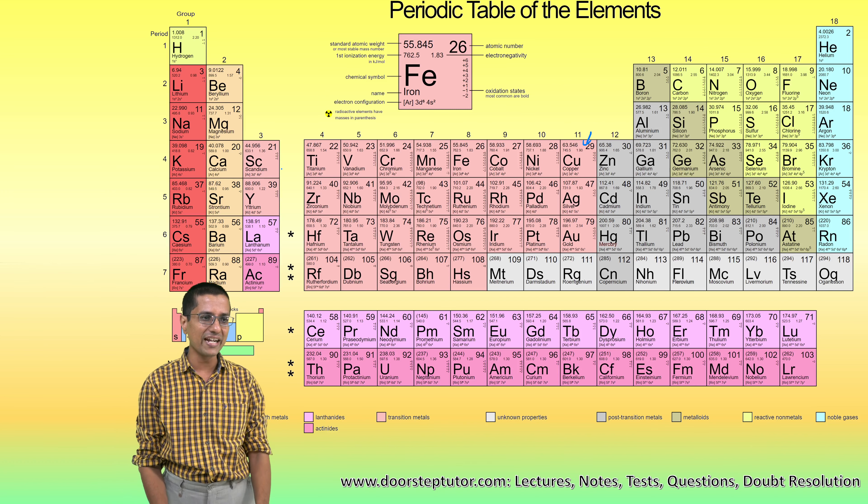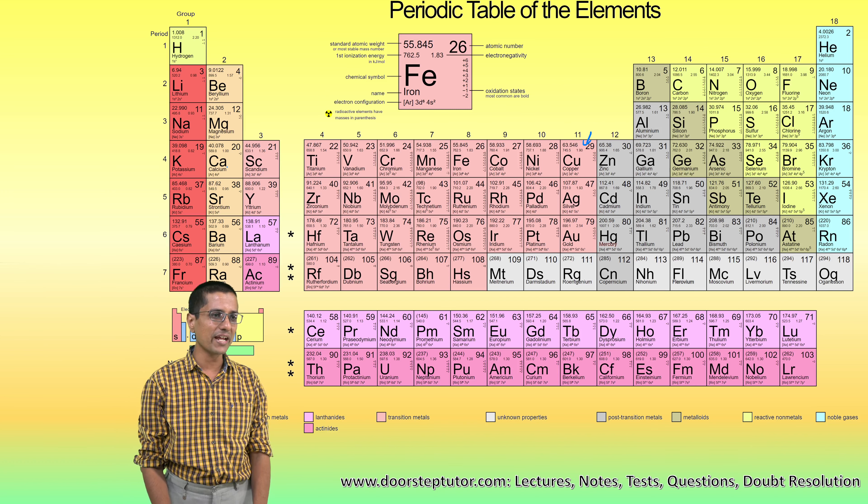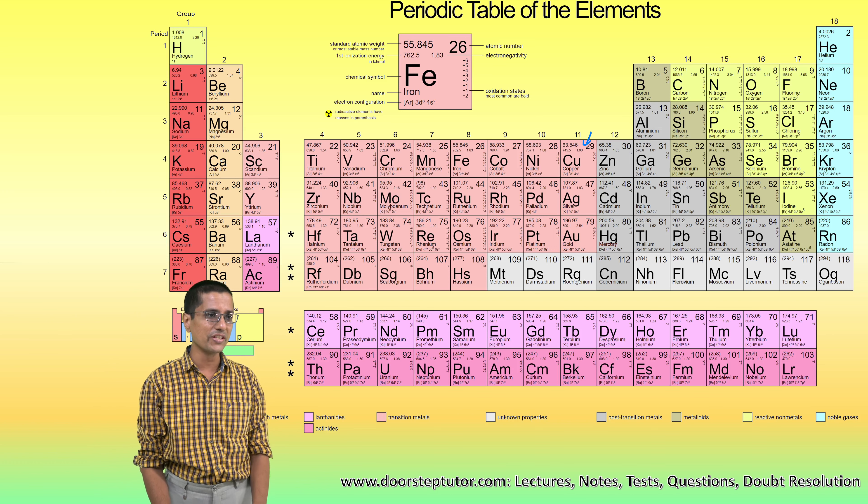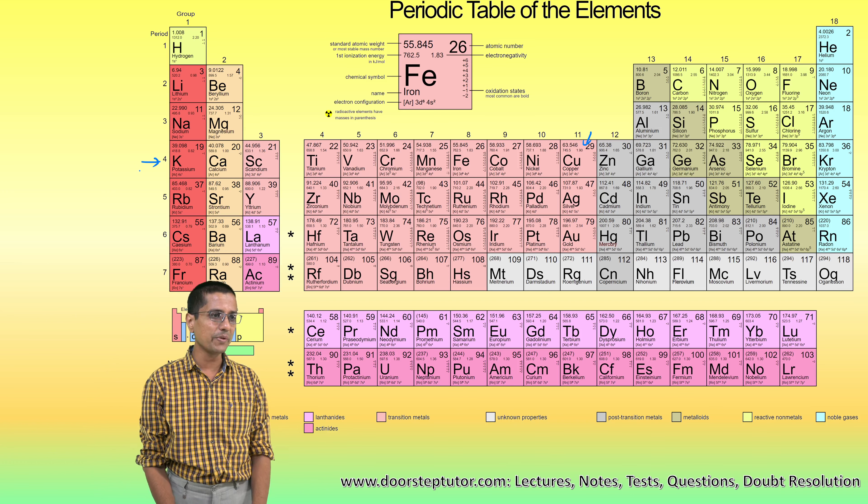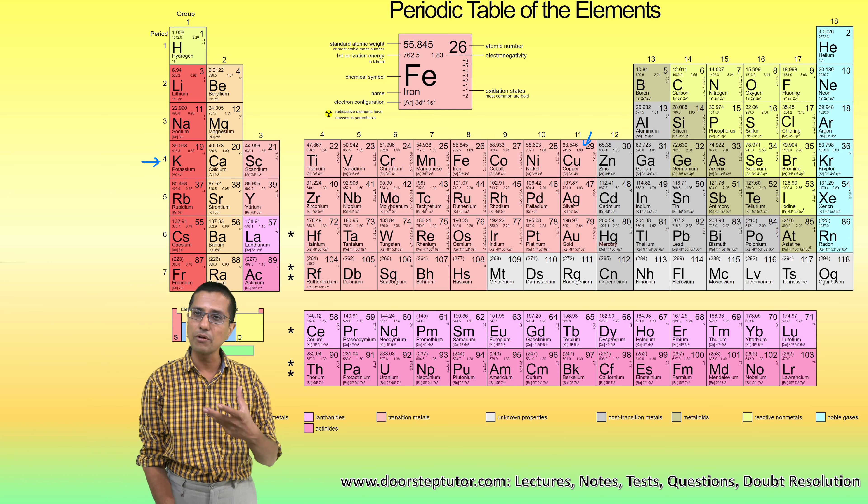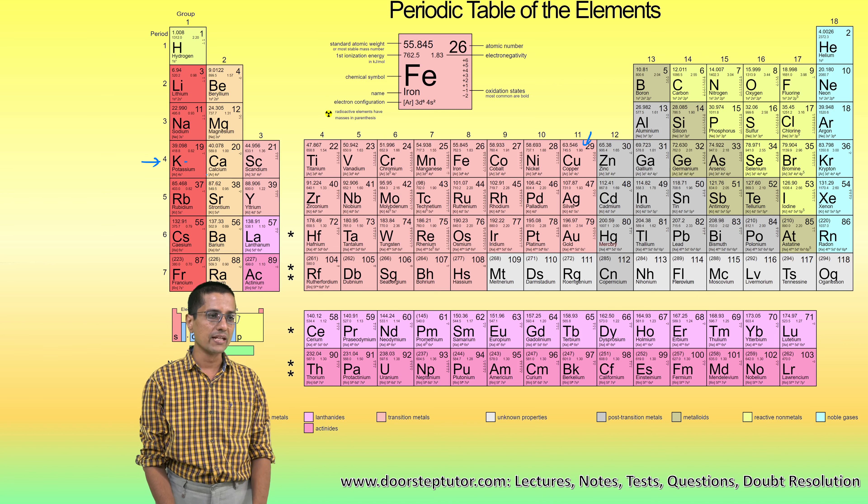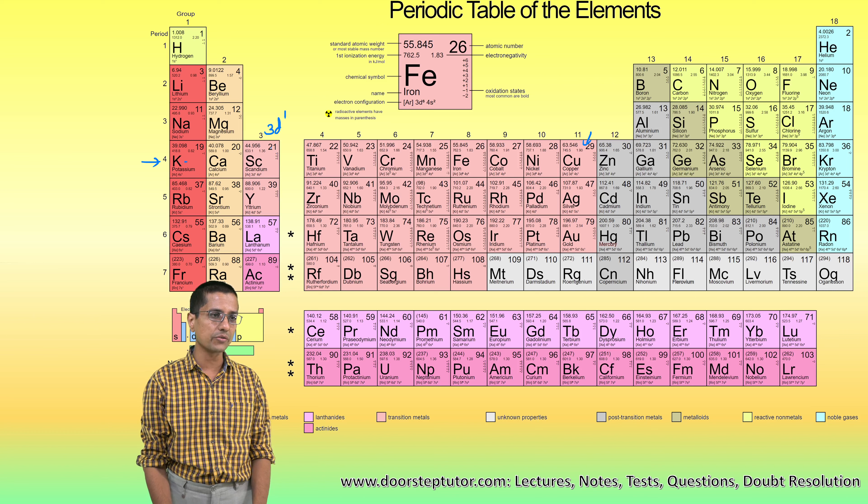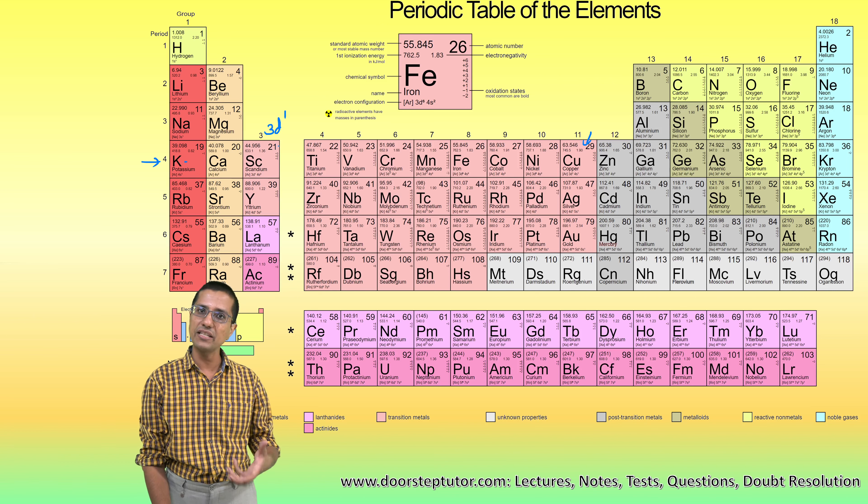Copper is in the fourth period, so we are filling the 4s orbital, which gets filled up till calcium. After that, we are filling the 3d orbitals. From scandium onwards, we are filling the 3d orbitals.